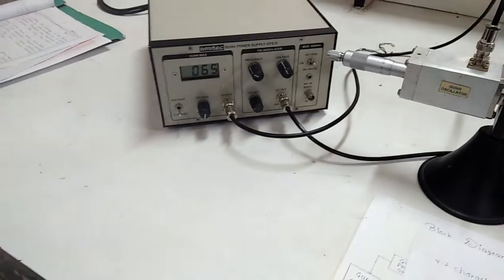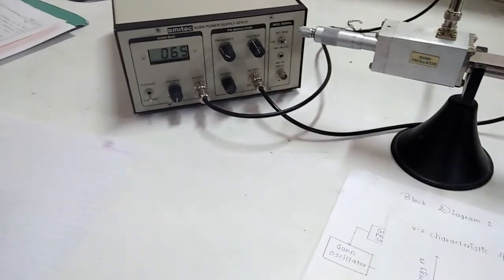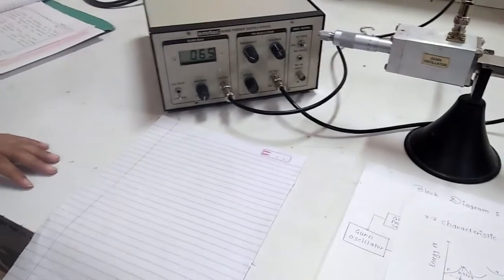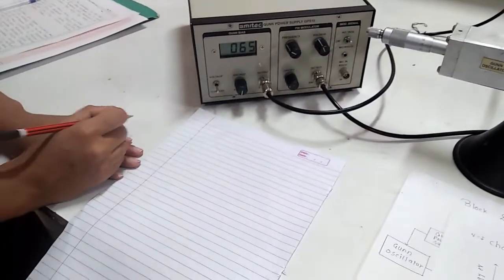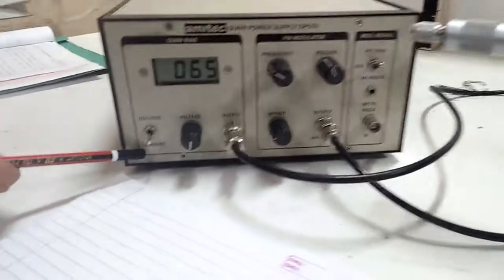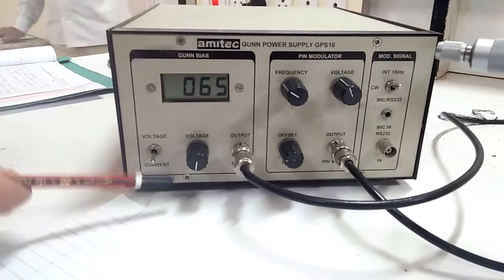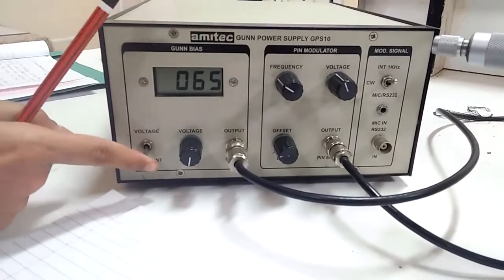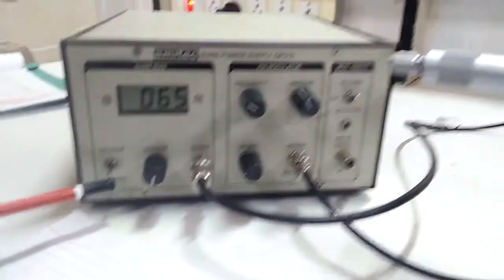Now we will take some readings to prove this relationship of voltage and current. Here we see a knob which shows voltage and current. Upward direction shows voltage while downward direction shows current. First we have to generate maximum power which we showed in earlier videos.